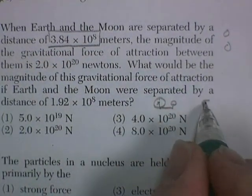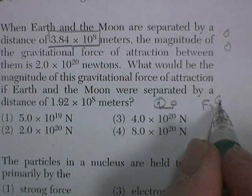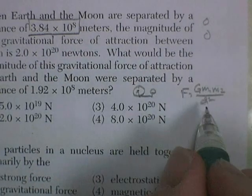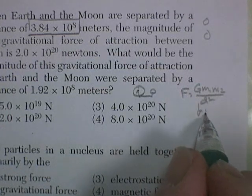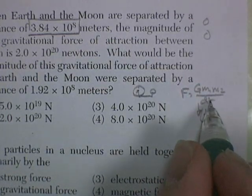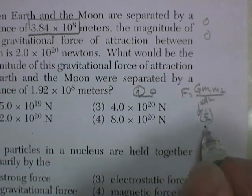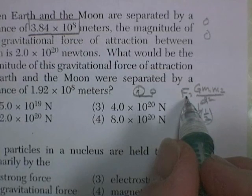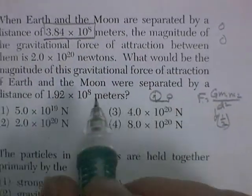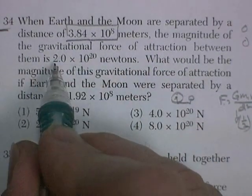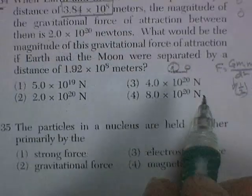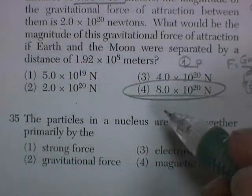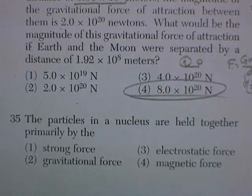The force of attraction is G·m₁·m₂ over distance squared. Now the distance is one half, and one half squared is a fourth, so it's going to be whatever the force was divided by one-fourth — four times as much force. The force was 2 times 10 to the 20, so it's going to be 8 times 10 to the 20 newtons. And there's the answer right there — but don't try this at home.